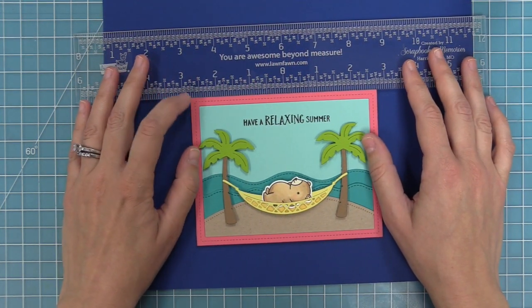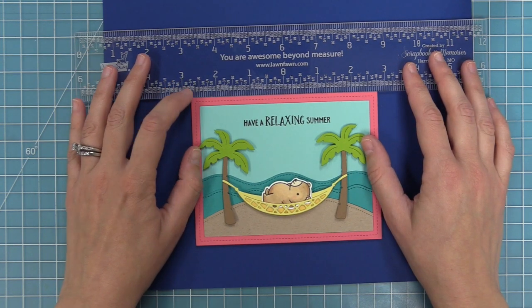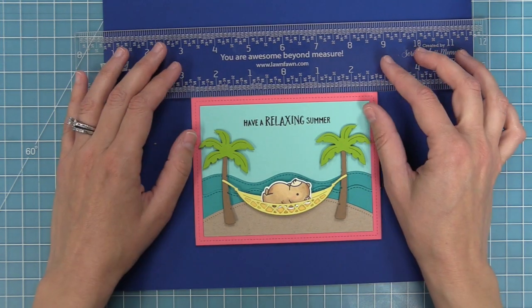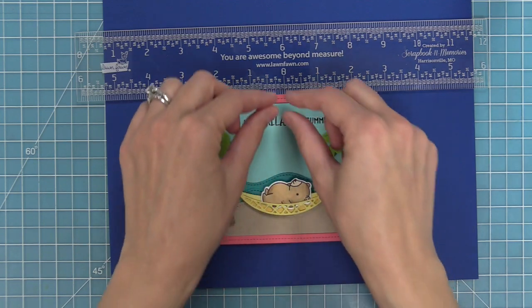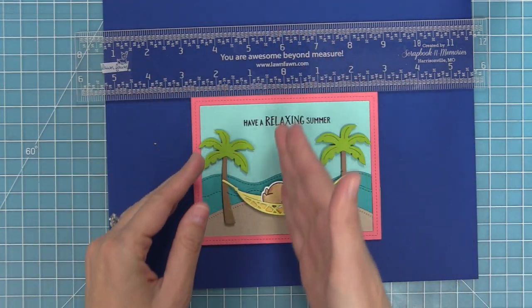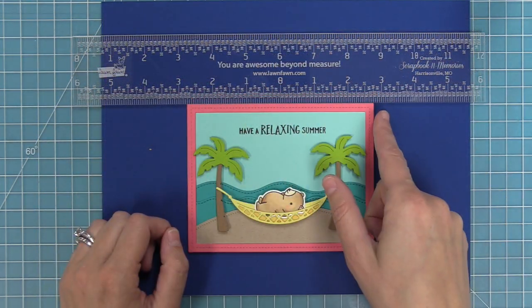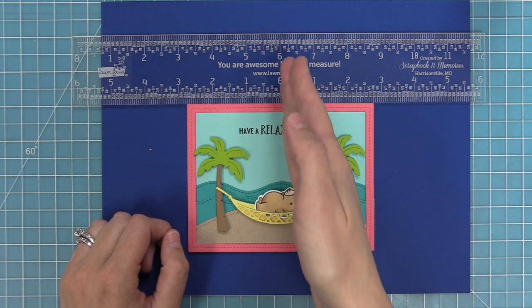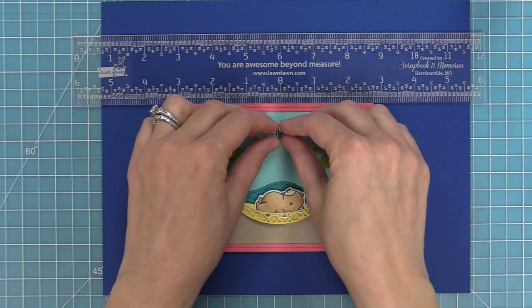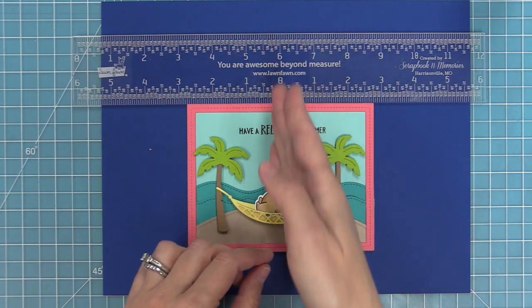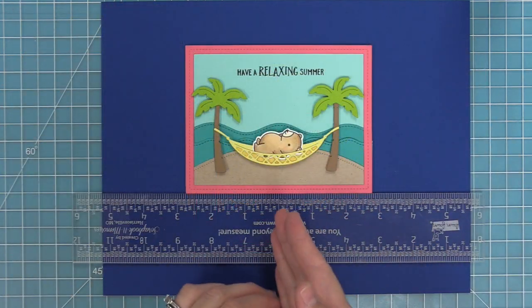I also like using these rulers to center things as I stamp or attach my die cuts. So in this case, I'm using that zero center and then measuring 2 3/4 inches out from either side. I could easily stamp my sentiment or line up my trees and hammock. I also love that I can take this ruler and flip it up in the other direction and line up some die cuts towards the bottom of the card as well.